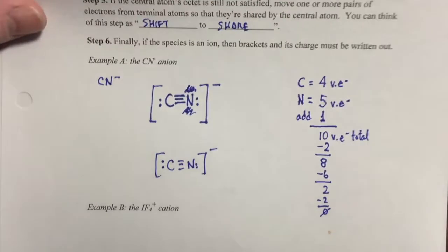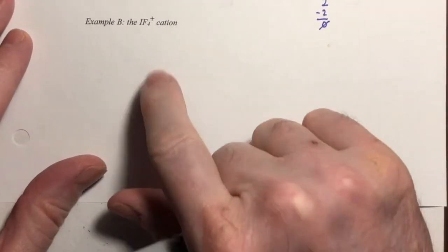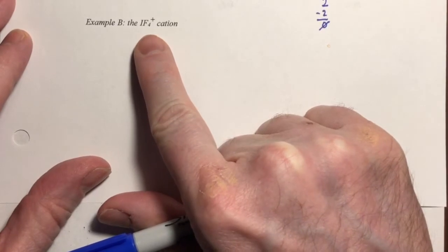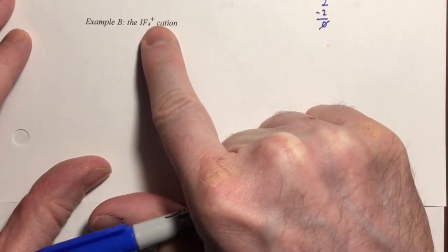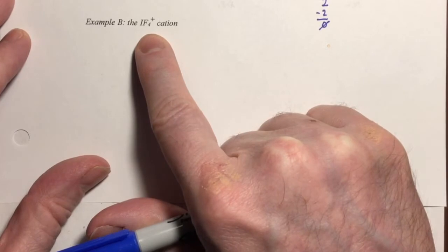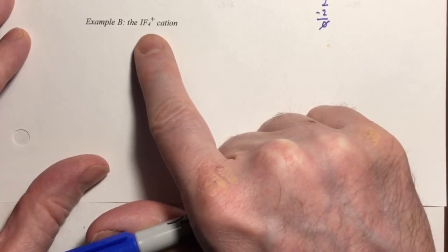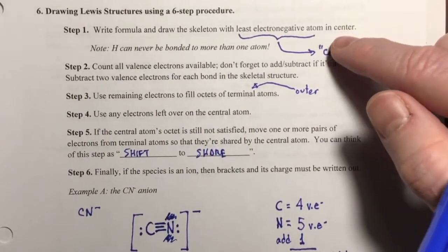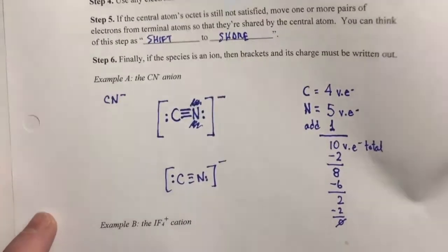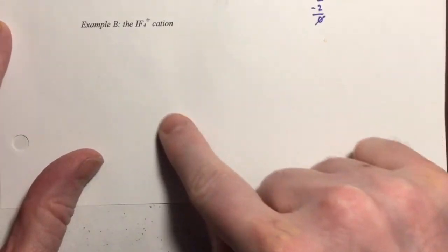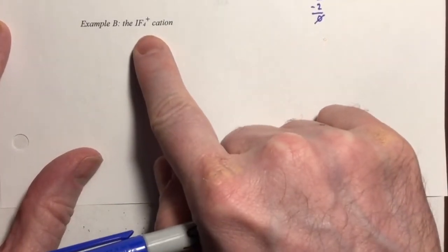I have another example and I'd like you to try it. This example is IF4 with a positive charge — a polyatomic cation. This cation is not one of the 34 you need to know, but go ahead and draw its Lewis structure. Follow the same procedure, step by step. Pause the video, work through it, draw the Lewis structure for IF4⁺, and when you're done resume the video and I will work through it.